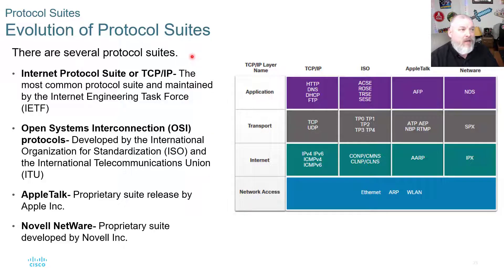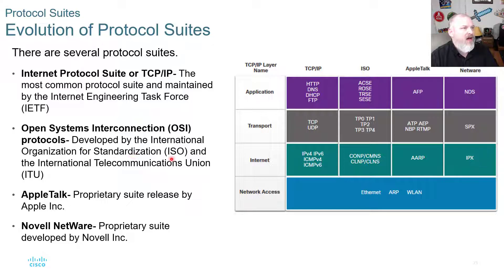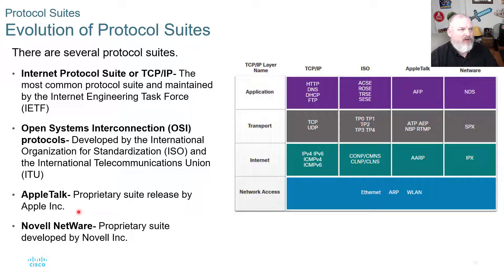Looking at the evolution of protocol suites: the Internet Protocol Suite, or TCP/IP, is the most common protocol suite and is maintained by the IETF — the Internet Engineering Task Force. The Open Systems Interconnection Protocol — OSI — is where you hear about the OSI model with seven layers, maintained by the ISO, the International Organization for Standardization, and the ITU, the International Telecommunications Union. AppleTalk was a proprietary suite released by Apple, and Novell had their own. Most of these aren't used anymore — back in the 90s Novell networks were common, but those have gone by the wayside.